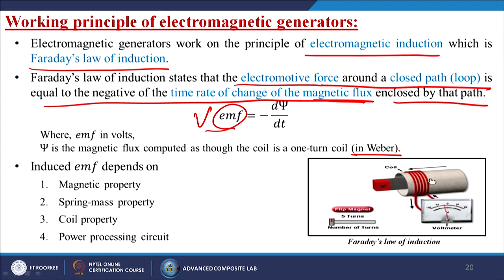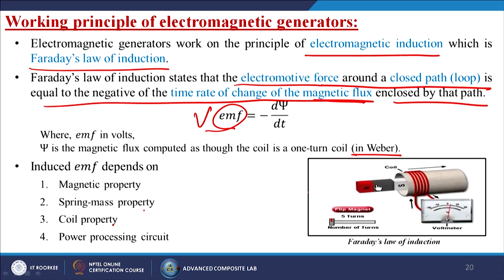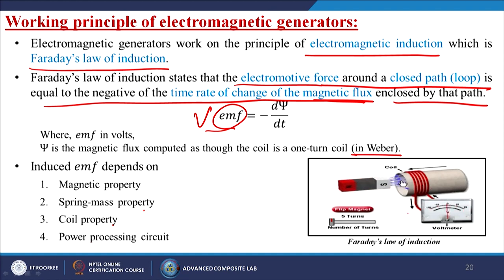Induced EMF depends on magnetic property, spring-mass property, coil property, and the power processing property. When moving the magnet inside the tube, electricity is generated — the voltage, which is the EMF — is based on Faraday's law of induction.